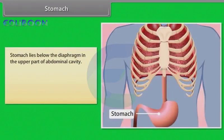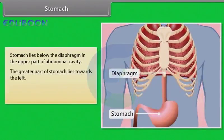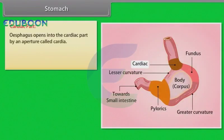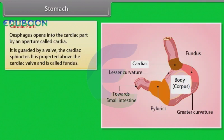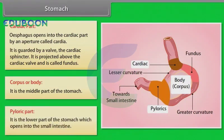The stomach lies below the diaphragm in the upper part of the abdominal cavity, with the greater part lying towards the left. The stomach can be divided into the following parts: the cardiac part, where the esophagus opens by an aperture called the cardia, guarded by the cardiac sphincter; the fundus, projected above the cardiac valve; the corpus or body, which is the middle part; and the pyloric part, the lower part which opens into the small intestine.